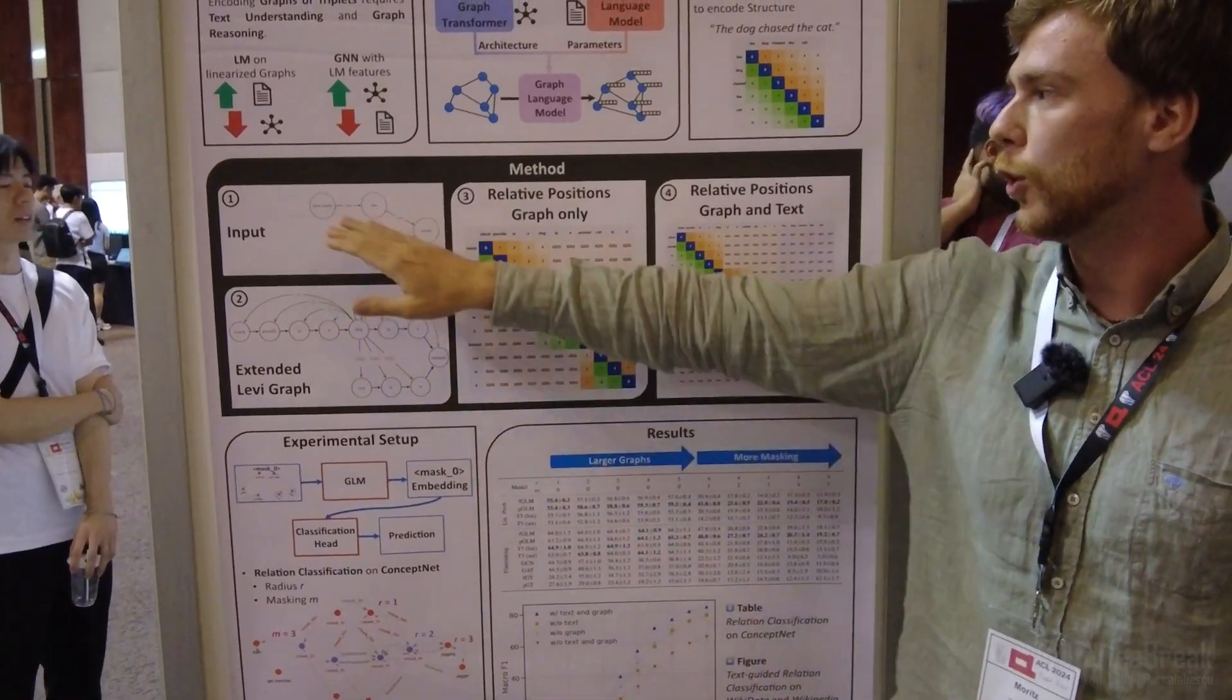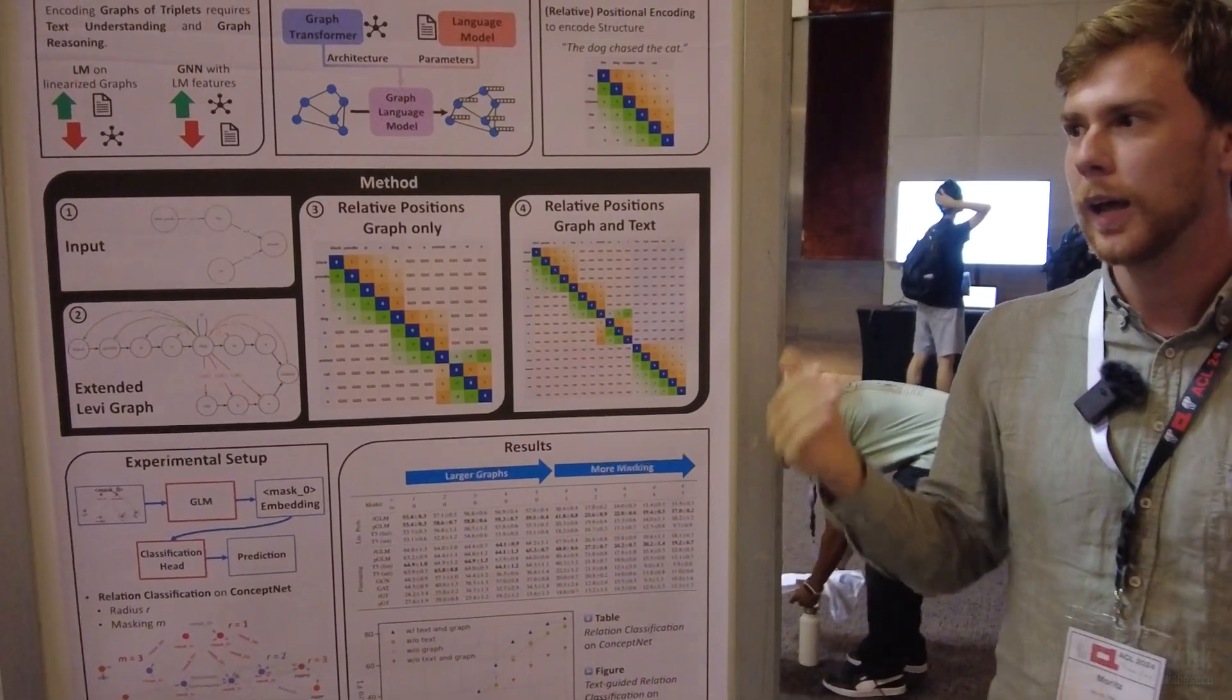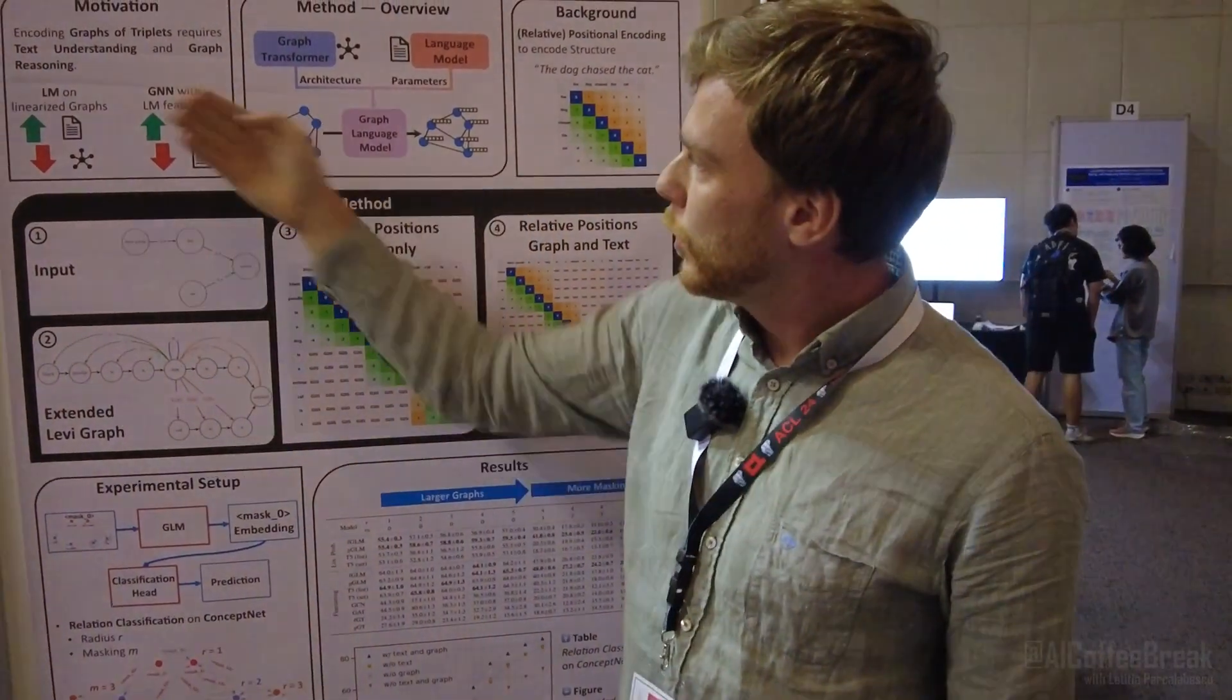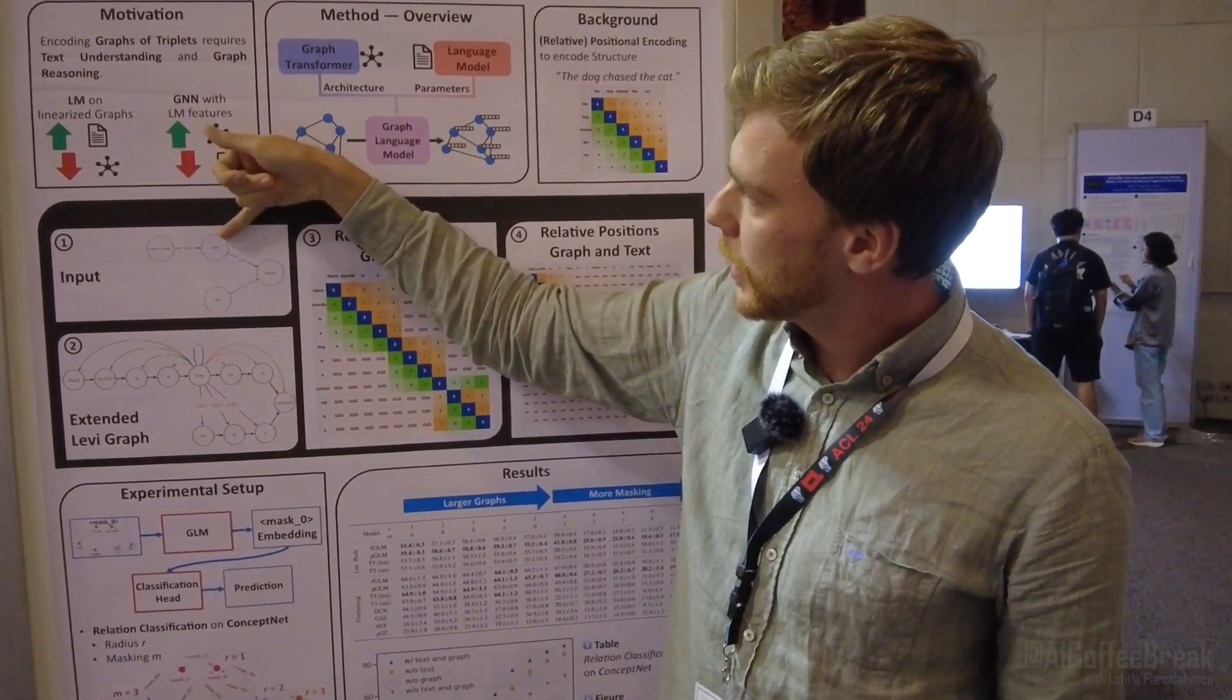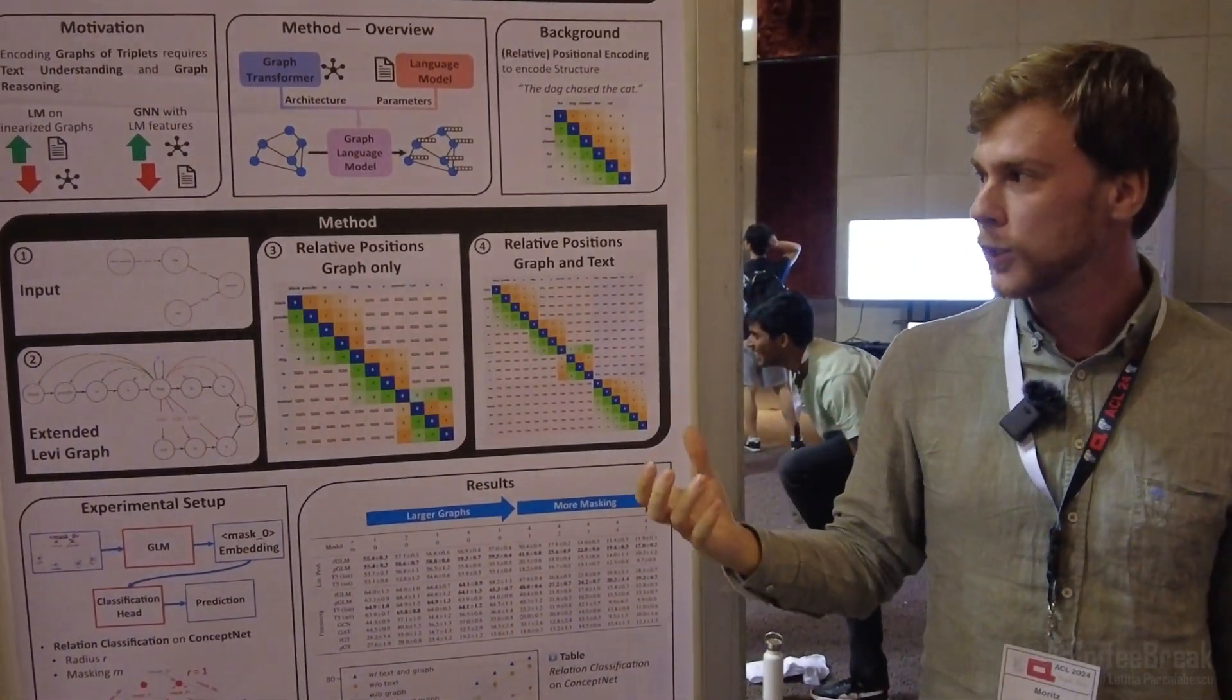However, language models can't deal with graphs, so people typically linearize the graph, putting one triplet after the other. And then you are well equipped to deal with the text data, but the graph structure is not so well used.